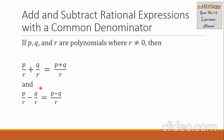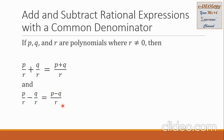Also, when we have P over R minus Q over R, this is equal to the numerator P minus Q all over the common denominator R.